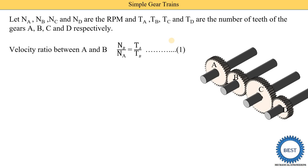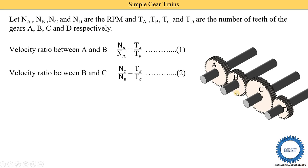Using the equation derived previously for a gear pair, the velocity ratio between gear A and B is: Nb/Na = Ta/Tb — that is, RPM is inversely proportional to the number of teeth. The velocity ratio between gear B and C is: Nc/Nb = Tb/Tc. The velocity ratio is generally the RPM of the output shaft divided by the RPM of the input shaft.